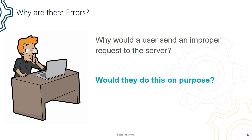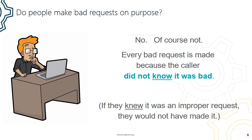But first we need to understand: why are there errors? Why would a user send an improper request to a server, or to a library, or to a component? Would they do this on purpose? Of course the answer is no. A bad request was made because the caller didn't know it was bad. What's the point in making a call that you're going to get an error? If they knew it was an improper request, they wouldn't have made it. And that's why there's an opportunity for the error message to fill the gap of knowledge — to explain what the system is going to do on a particular kind of request.